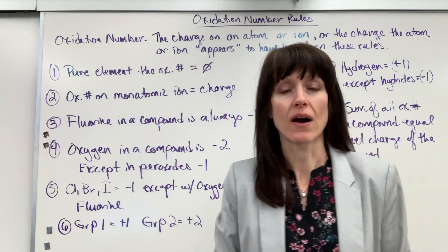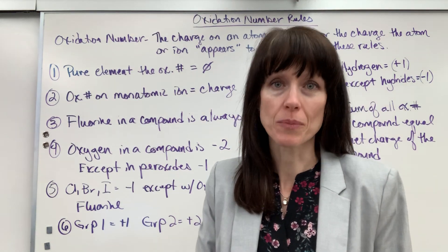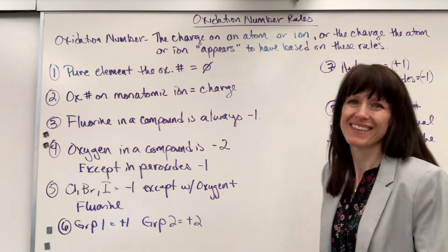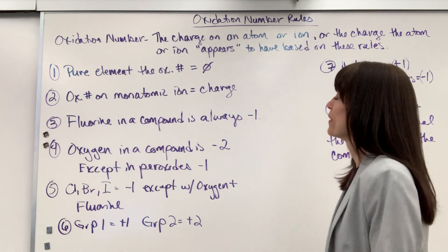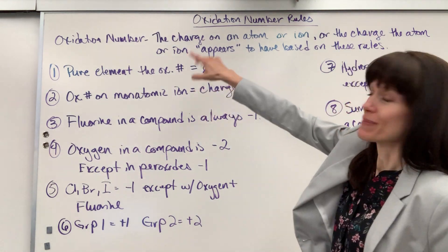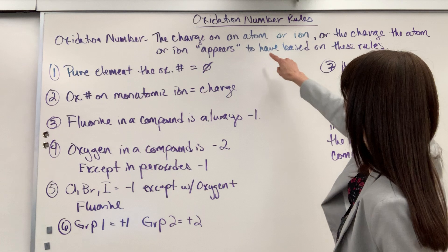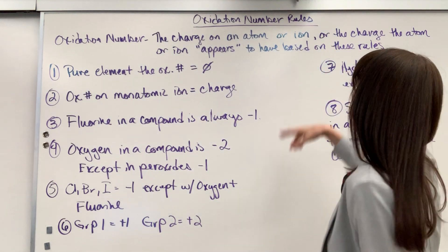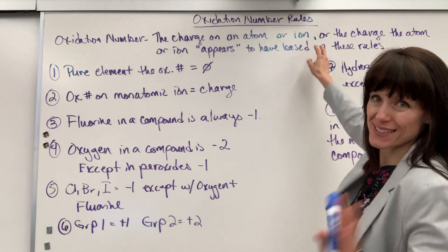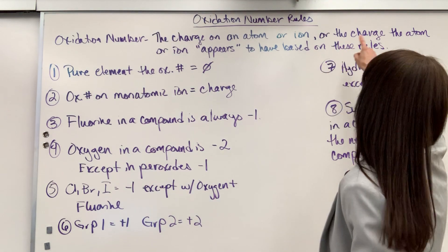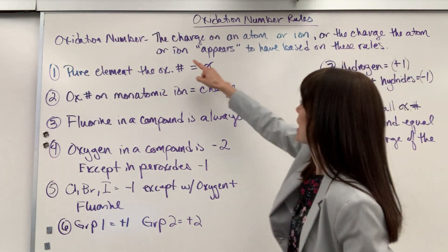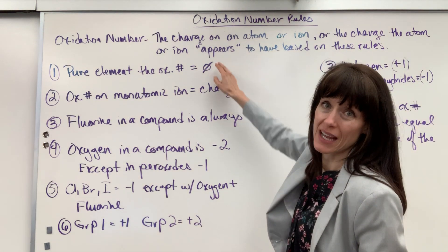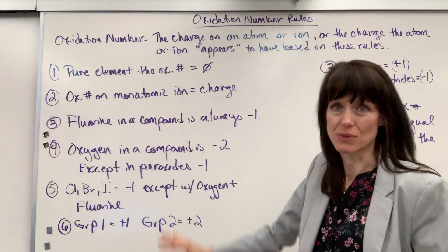We're going to talk about oxidation numbers and their rules. Let's start with the definition. An oxidation number is the charge on an atom or ion — or this is where you'll go 'what?' — the charge on the atom or ion that it appears to have, and it's based on these rules.